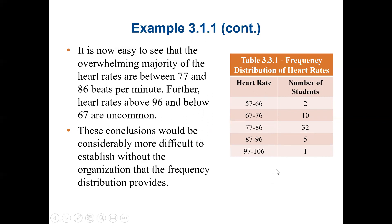The frequency distribution organizes our data so we can find a meaningful pattern. The pattern here is that most students' heart rates are between 77 and 86. No student has a heart rate over 106 or below 56. This conclusion would be considerably more difficult to establish without that organization.